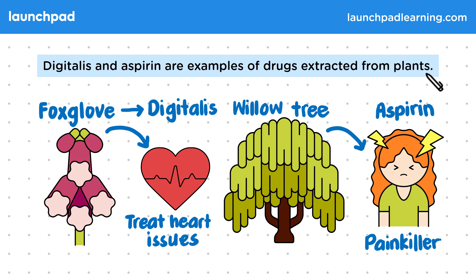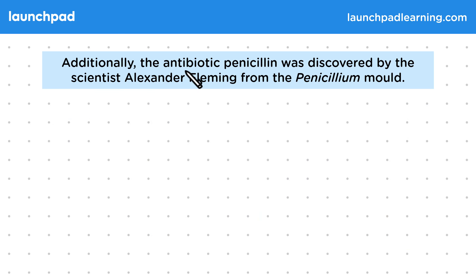For the exam, you need to describe the heart drug Digitalis as originating from foxgloves and the pain-killer Aspirin as originating from willow. Additionally, the antibiotic penicillin was discovered by the scientist Alexander Fleming from the penicillium mould.